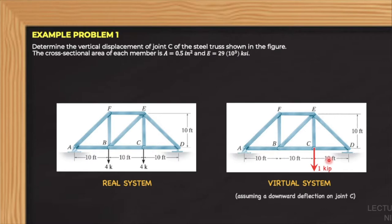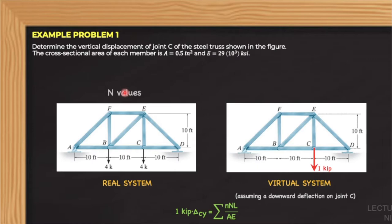We will apply the formula for trusses subjected to external loads: 1 kip multiplied by delta CY is equal to summation of N multiplied by n times L over AE. The uppercase N is the member force in the real system, obtained by the method of joints. The lowercase n is the member forces in the virtual system, also obtained by method of joints or sections. L, A, and E are the length, area, and modulus of elasticity of the truss members. Note that the area and modulus of elasticity are the same for all members.